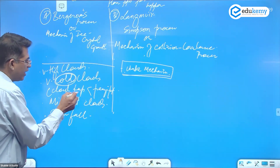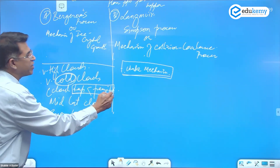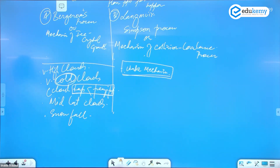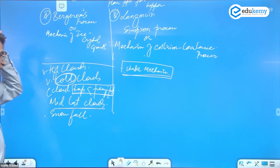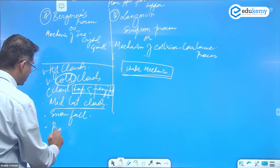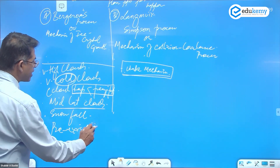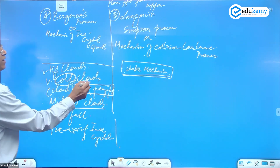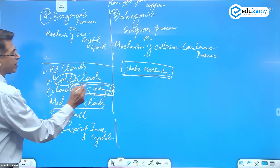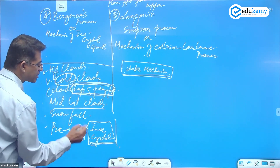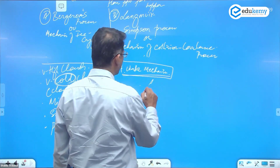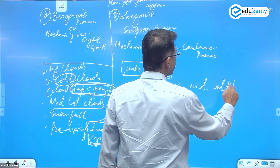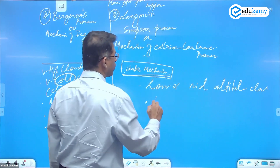Cold clouds are clouds where the temperature is below the freezing point — the temperature should be in minus degrees. In such clouds, there are pre-existing ice crystals — that's why the cloud needs to be below the freezing point, because ice crystals are needed for Bergeron's Process.